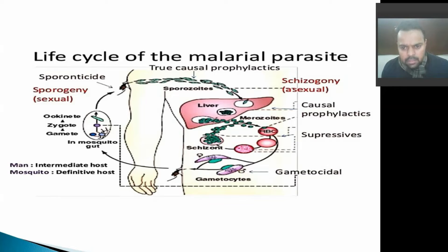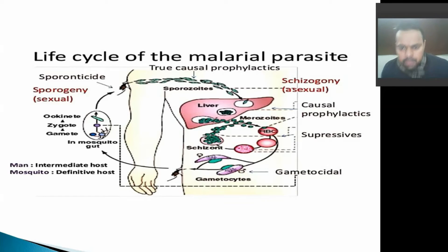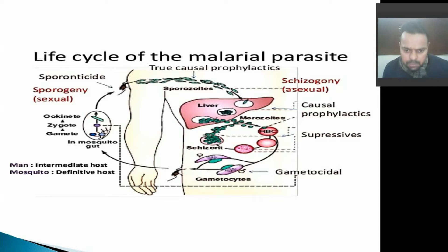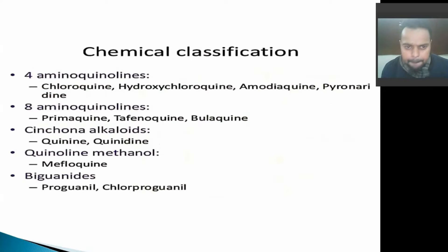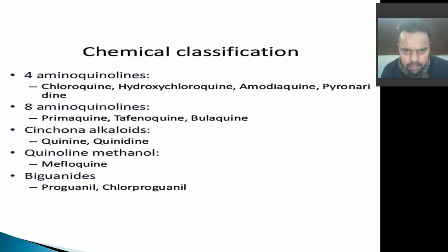The schizonts become spread in our blood, and after that these schizonts are recaptured by the mosquito, and the mosquito's outer cycle begins. We will now discuss the anti-malarial drugs.